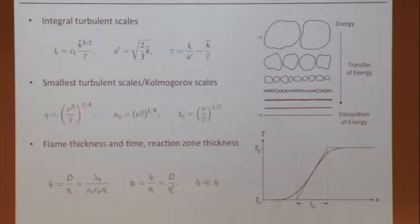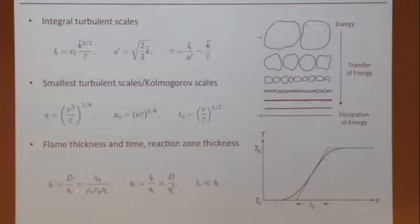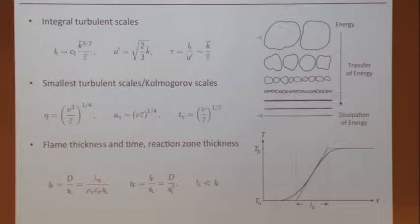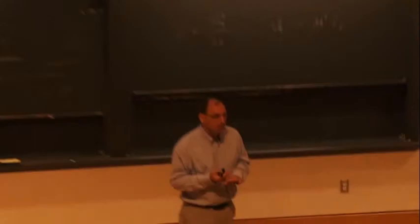For laminar flames, we defined the laminar flame thickness as D over S_L, or like this if we use a unity Lewis number. There's also a flame time scale. For each one of these, you always have two scales: a length scale and a velocity scale, and the time scale always follows from these two.